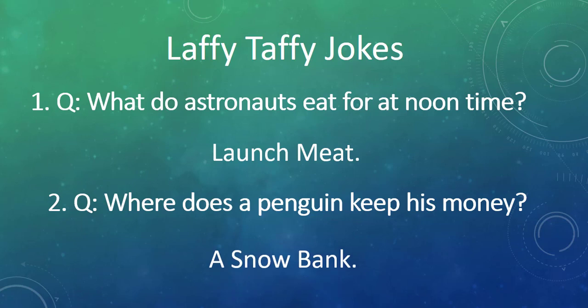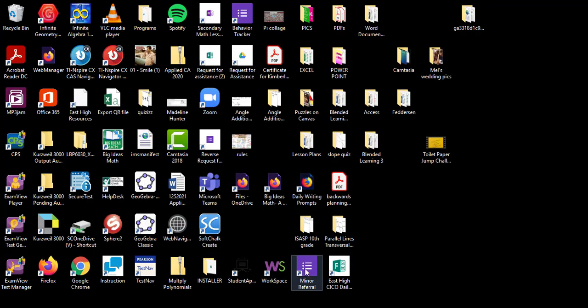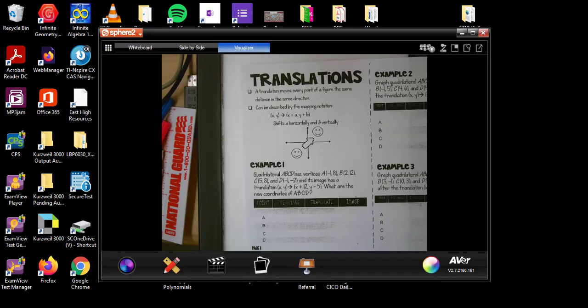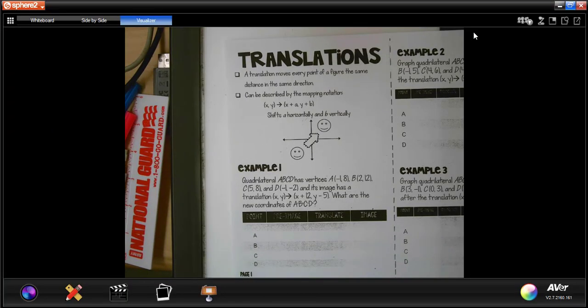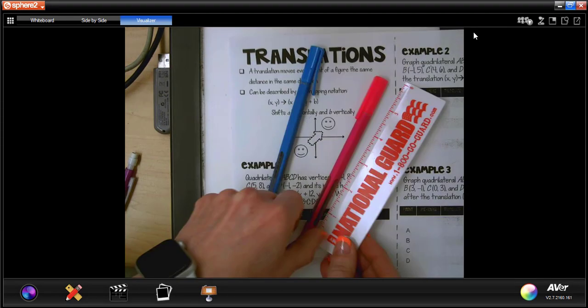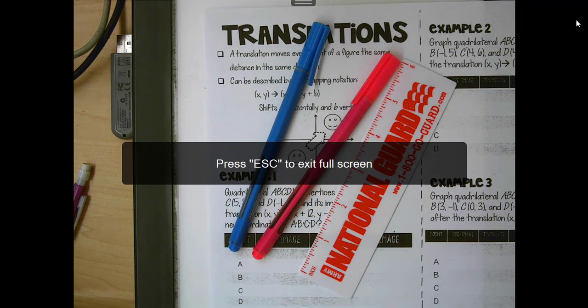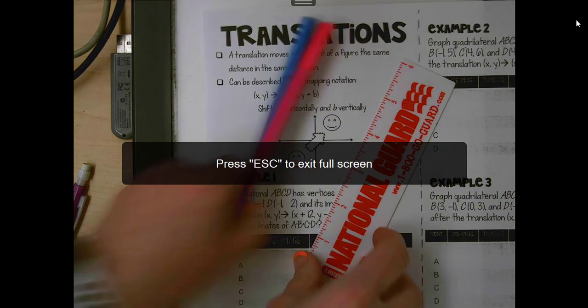Let me get my station set up here, and what I'd like you to do is make sure you have two different colors and a ruler. Two different colors and a ruler, and you will be set. So let's get to it.